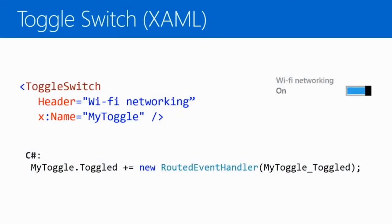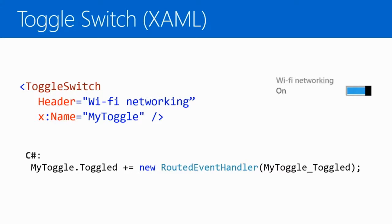In XAML, you can declare things or do things imperatively in code. If you did WinForms programming, you're used to having a named control and wiring up an event handler. Here's a visual representation of a toggle switch as it will look in our application — here's the XAML declaration in text, and here's the way of doing the same thing in code. If you're not ready to go fully declarative, you can just use imperative code.